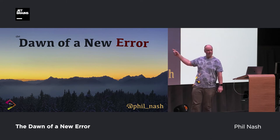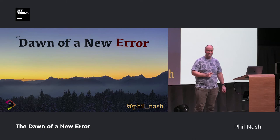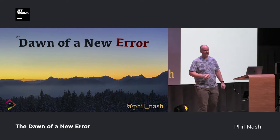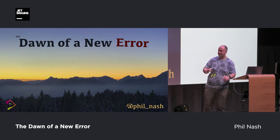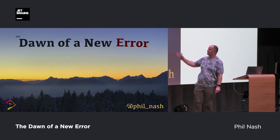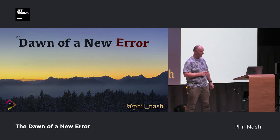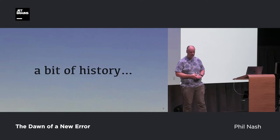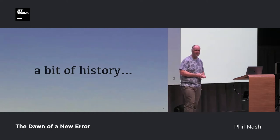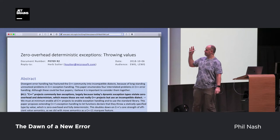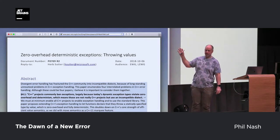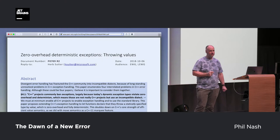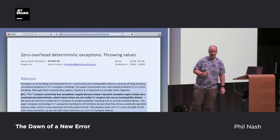The background image is actually from the JetBrains winter getaway in Munich last year — this is the view from the hotel room. I thought it would make a perfect backdrop to represent the dawn of something new. I want to start with a little bit of history — at least the history of error handling in C++. This is really what we're going to be talking about: proposal P0709, "Zero overhead deterministic exceptions — throwing values."